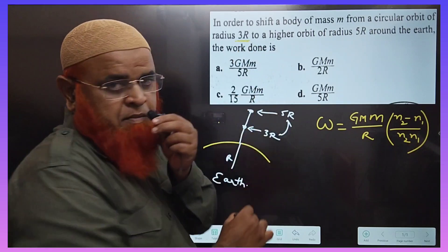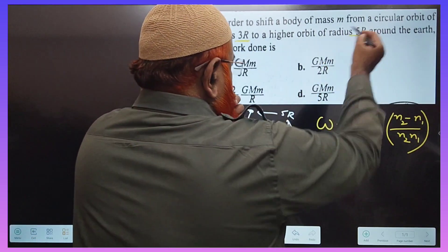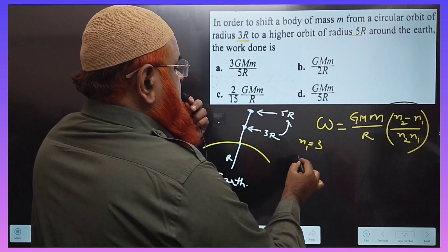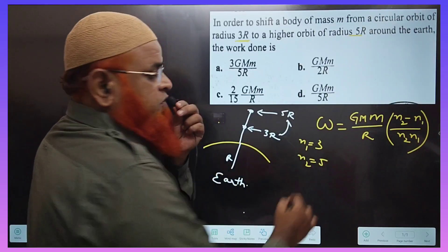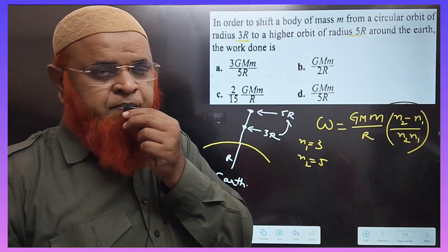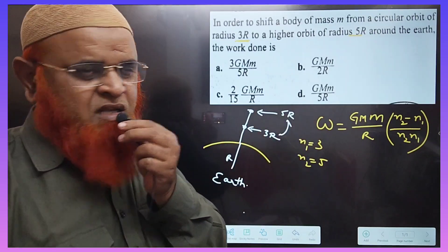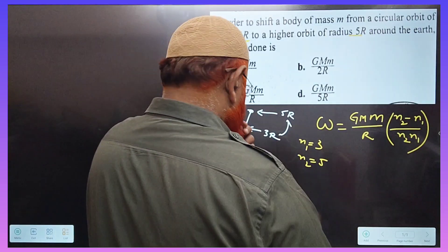This is going to be 3R, this is going to be 5R. That means n1 equals 3 and n2 equals 5. Here, this is a shortcut actually, so directly you can substitute that and get the answer within one single step. So therefore, you will be getting how much?